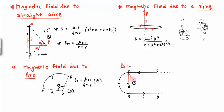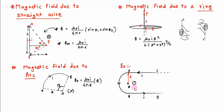Now we'll solve an example using the formulas we've learnt. There is a semi-infinite wire CA carrying current I, then the current passes through a semicircular arc of radius r, and then goes out through wire BD. We need to calculate the magnetic field at point O, the center of the semicircular arc. The magnetic field due to both semi-infinite straight wires points upward (out of the page), and the magnetic field due to the semicircular arc also points out of the page.